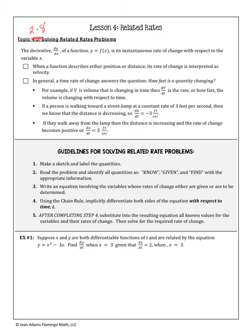Here are the guidelines we'll follow — a change-up on the four-step plan. Start with a sketch, then read the problem and identify what you know, what you've been given, and what you're tasked to find. Then write an equation involving the variables whose rates of change are either given or to be determined. Use the chain rule and differentiate both sides using implicit differentiation with respect to time. Finally, substitute all known values and answer the question. Let's look at example one — it's not a word problem.